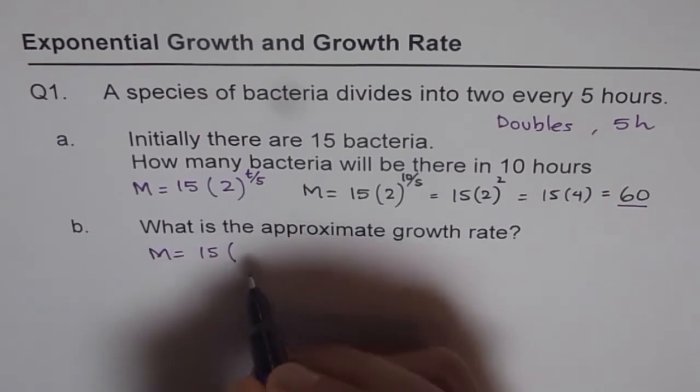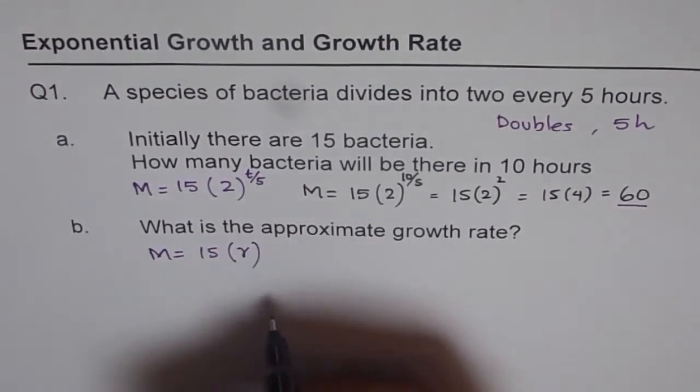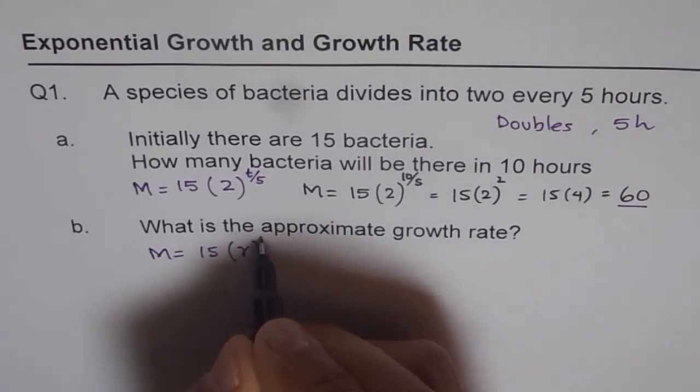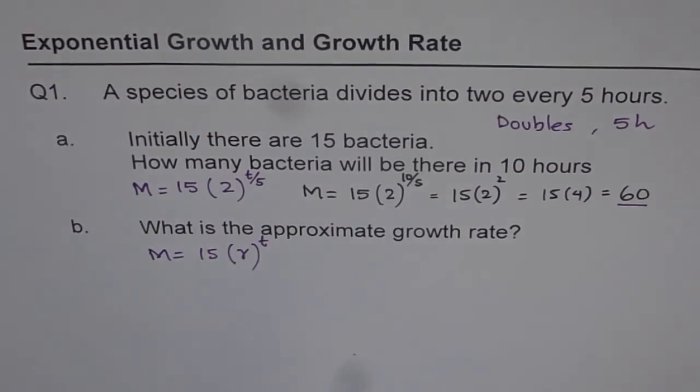Now we can also write exponential function in the form of M is equals to initial number of bacteria, which is 15, times by what factor are they multiplying? Let us say R over to the power of T. So that will give us the growth rate.